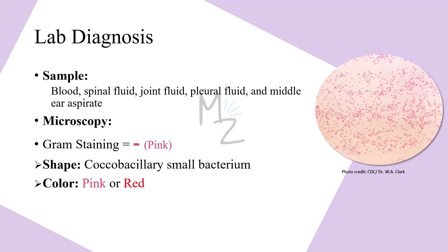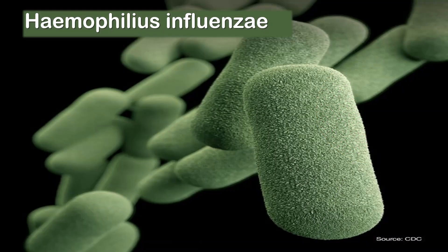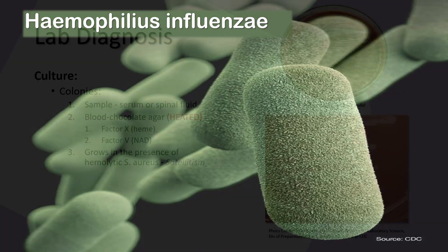On gram staining this bacterium appears gram-negative because it is pink-colored. It is a coccobacillary small bacterium, which shows it has got two shapes — one is coccus and the other is bacillus, that is rod. It is pink or red in color because it is gram-negative. This is how the bacillus form of Haemophilus influenzae looks.